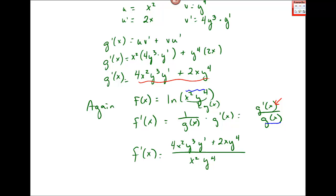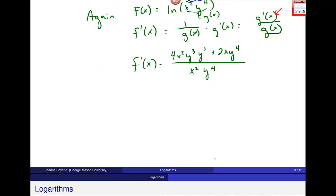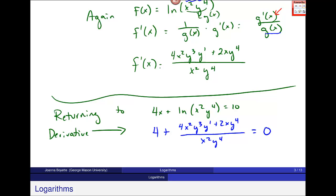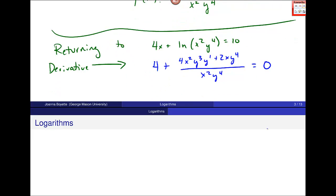Now I want to go back up to my original problem and return to that. These are longer problems. Returning to 4x plus natural log x²y⁴ equals 10—this is my derivative here. The derivative of 4x we said was 4. The derivative of this piece is right here: (4x²y³y' plus 2xy⁴) over x²y⁴. And the derivative of 10 is zero.